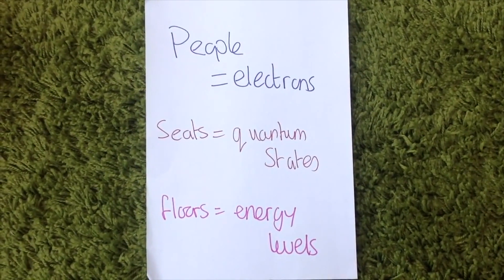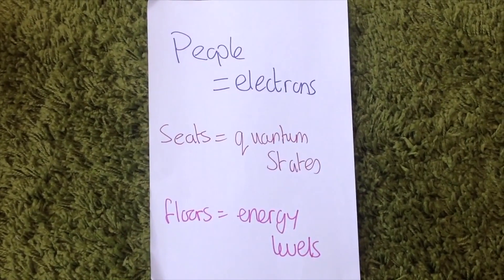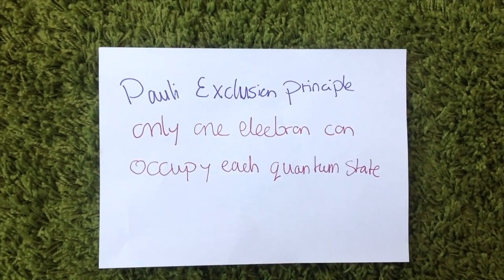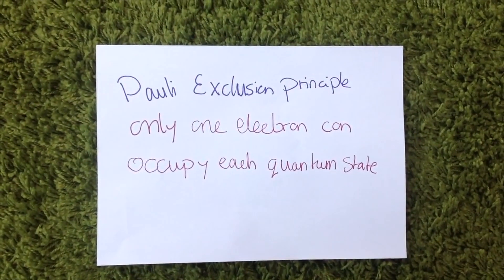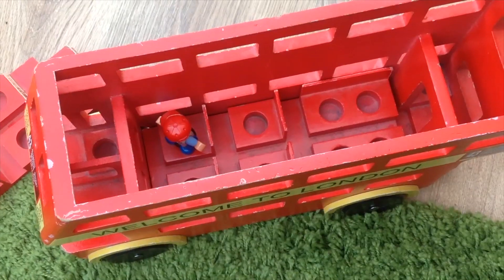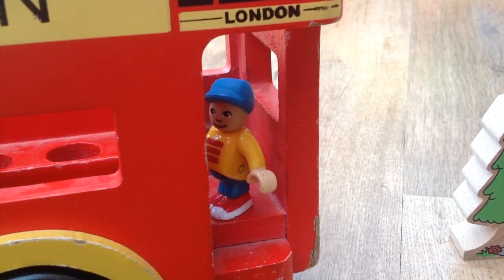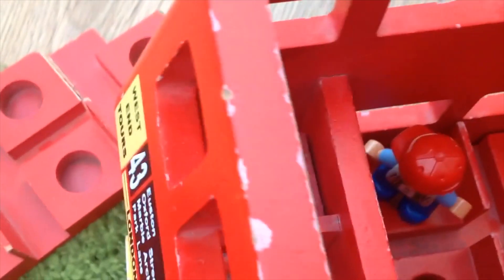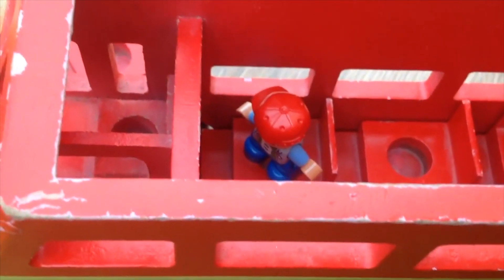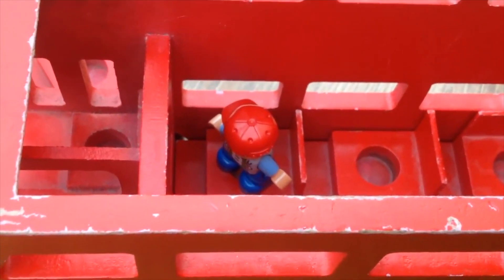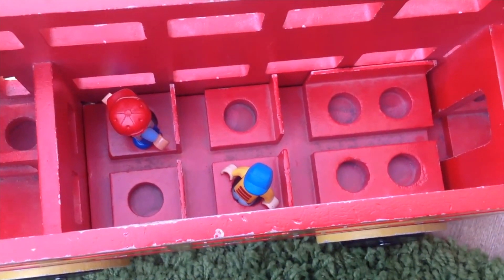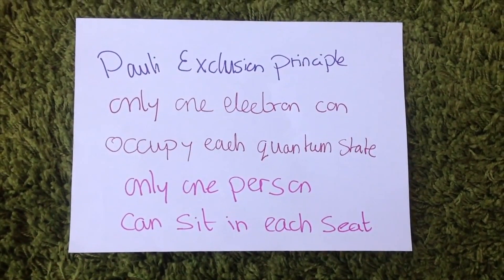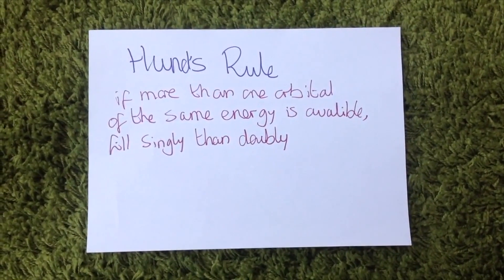To explain this, people are the electrons, the seats are the quantum states, and the floors are the energy levels. Starting with Pauli's exclusion principle: only one electron can occupy each quantum state. So as the second person gets on the bus, he sees that one seat is already filled by another person — another electron — so he can't sit in that seat. Only one person can sit in each seat.